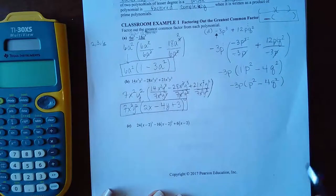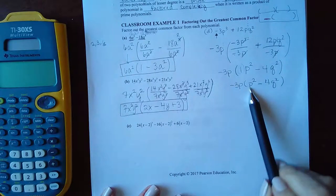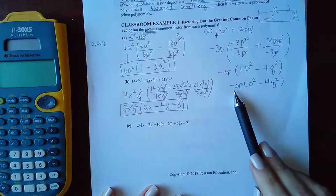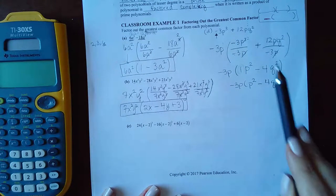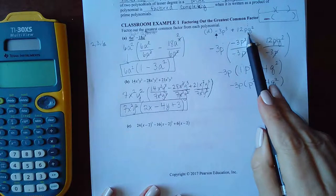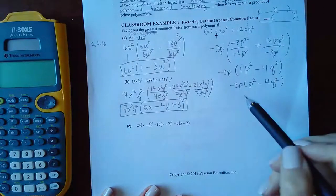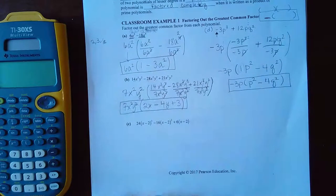Now check it. Does this times this give me negative 3P cubed? It does. Does negative 3P times a negative 4Q² give me positive 12PQ²? It does. So this is my final correct answer.